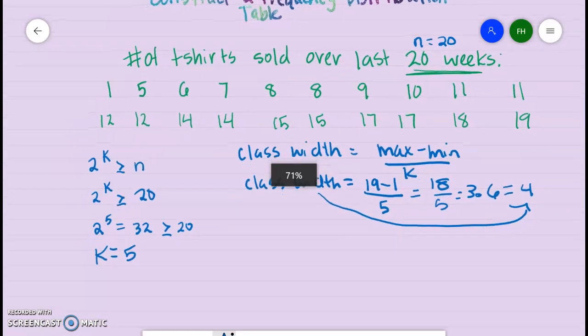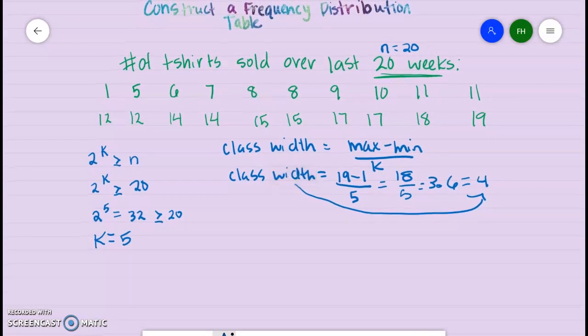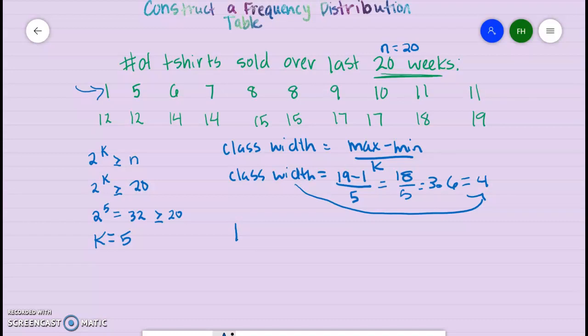Now we know that we're going to have 5 classes. We're going to start our first class at 1, because that's our smallest. Then we need our width to be 4. We've already included one number, and we want to have 4 numbers, so we need to add 3 more numbers to that, which would get us at 4.